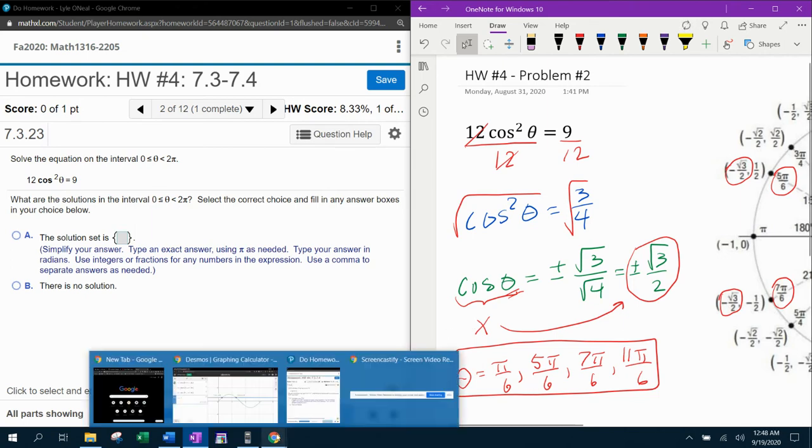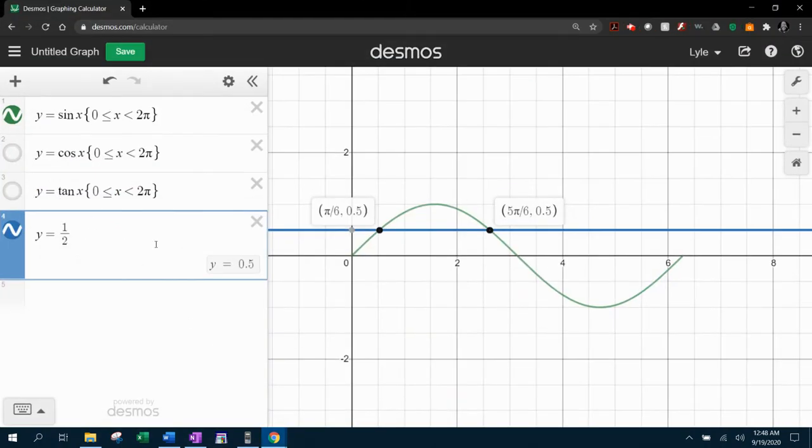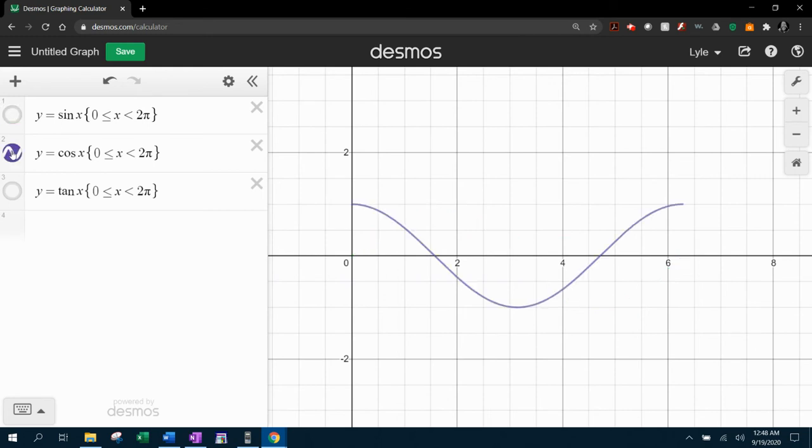So we're going to look at how do we verify this with Desmos. We're going to delete that, we're going to turn the sine off and turn the cosine on. Now remember that we were restricted for values from zero to two pi. So we're looking at all of the angles, or in this case, the x values that produce a y value of square root of three over two.